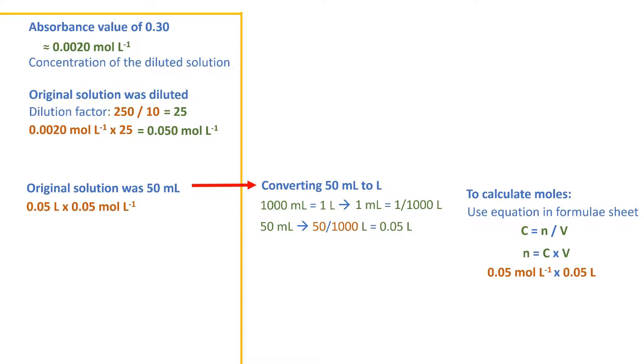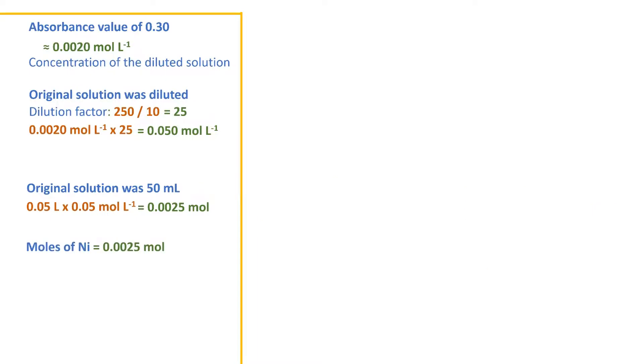And this is what we did in order to calculate that we had 0.0025 moles. With 0.0025 moles of nickel, and the molar mass of nickel, we calculate the mass of the nickel sample for 0.15 grams.